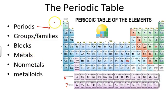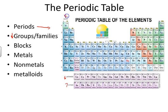Groups or families — there are 18 of these. Groups or families are going to be vertical columns. So we have 1, 2, 3, all the way out to 18.